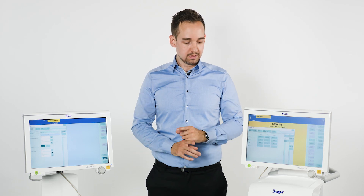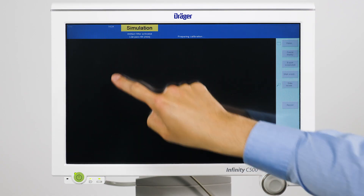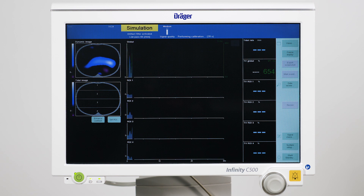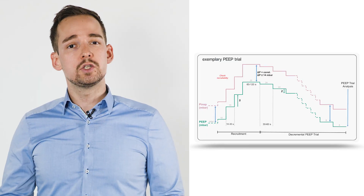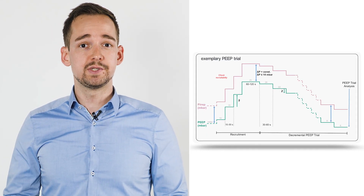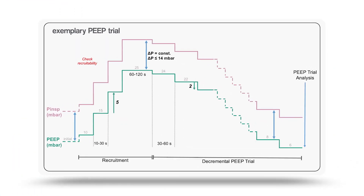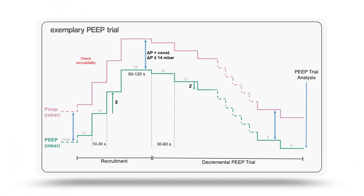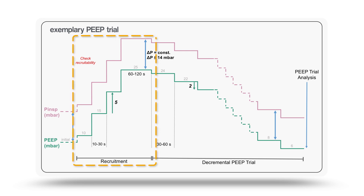Once a connection is established we can start an EIT measurement by PomoVista to monitor the patient's ventilation distribution. In order to assess the lungs response to different PEEP levels we need to perform a PEEP trial. One possible workflow could be an initial recruitment maneuver followed by a decremental PEEP trial.